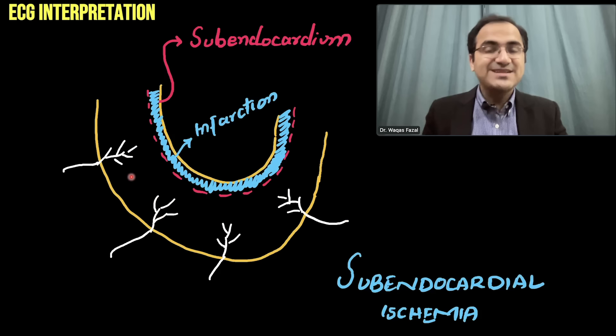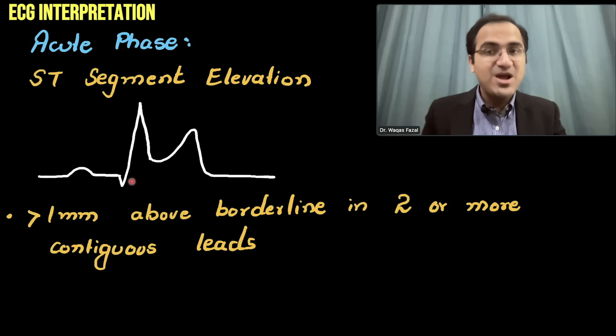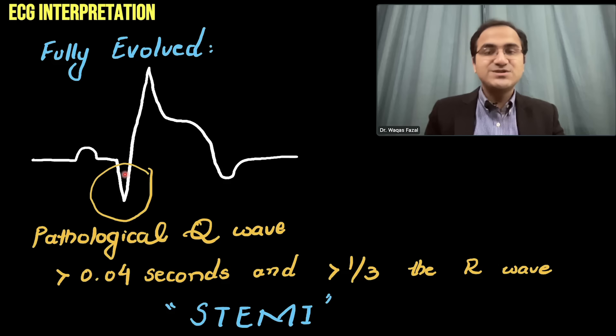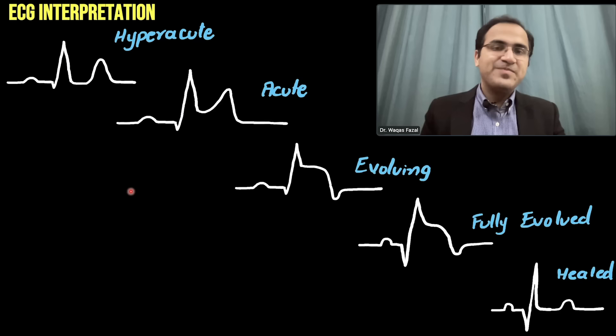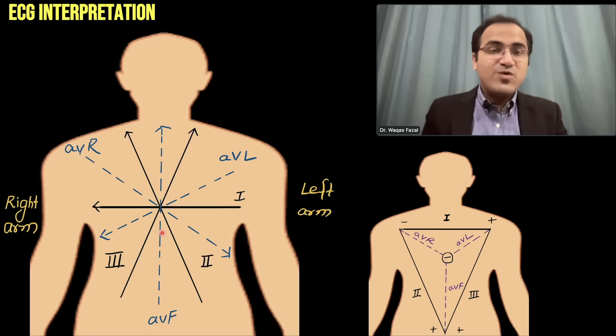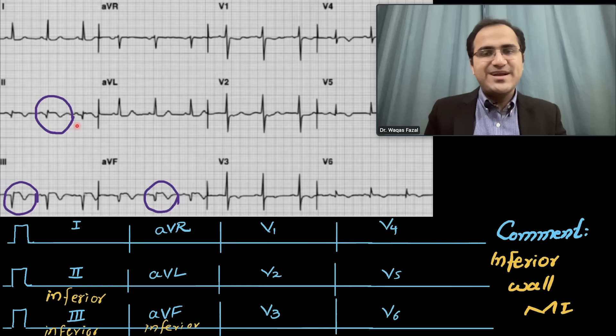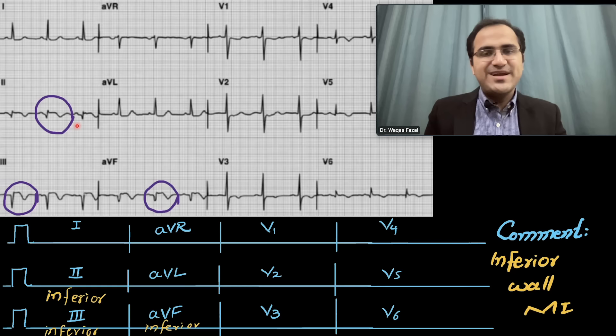To summarize this video: we talked about ischemia and its types — subendocardial and transmural ischemia — the phases of transmural ischemia including hyper-acute, acute, evolving, fully evolved with pathological Q waves, and healed phase. We covered what the different leads represent and solved multiple ECG examples. Please subscribe and check out the other videos in the ECG interpretation made easy by six-step method series.